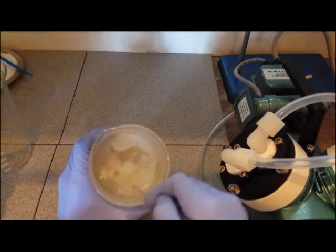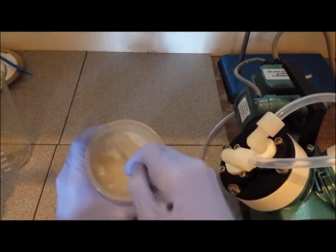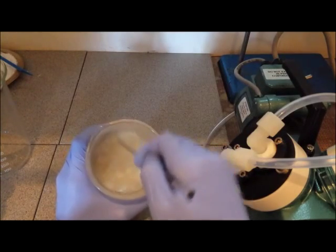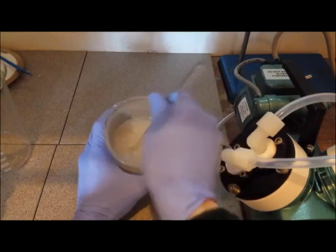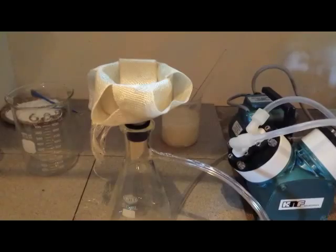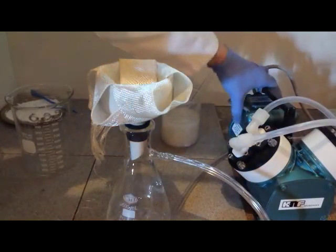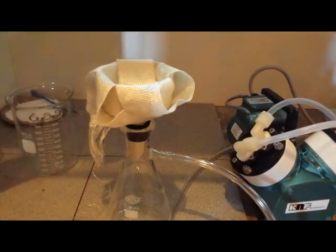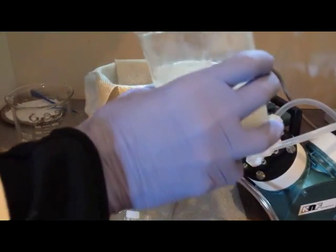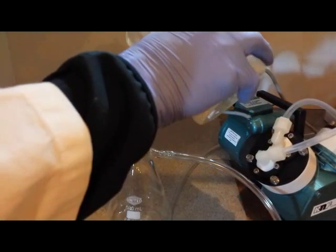I then opted to vacuum filter this. However, because there are strong acids present, regular filter paper cannot be used. Normally, to filter strong acids, one uses sintered glass funnels. However, I do not have a sintered glass funnel, so I opted to use these strips of fiberglass.